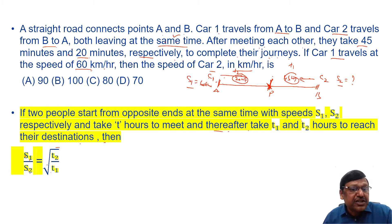We know speed and time are inverse relation, but why are we writing square root of T2 by T1? This T2, T1 are not the time taken for the entire journey. These are the times taken to reach the destinations after meeting, not for the entire journey. So this is the relation. This is the shortcut.